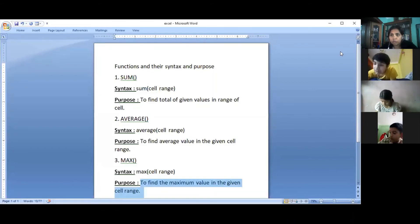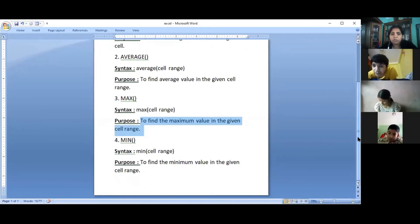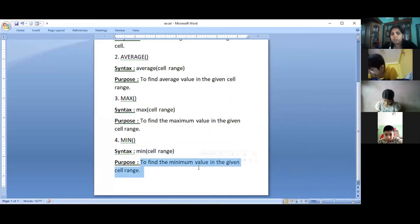Now the fourth one is the MIN function. Here is the syntax and purpose. The syntax is MIN(cell range). It is used to find the minimum value in the given cell range. If there are a group of values of the same type, then the MIN function helps us to find the lowest value from the group. Got it?